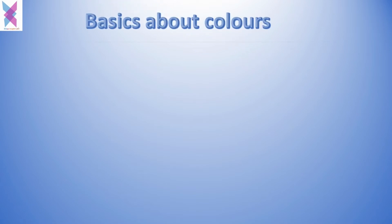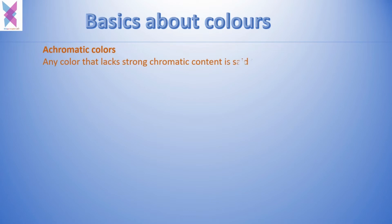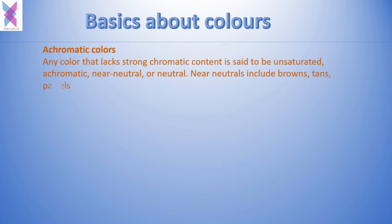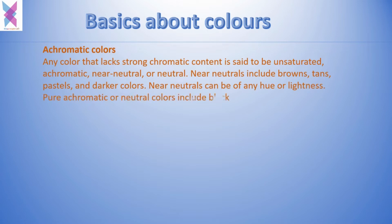What is achromatic color? Any color that lacks chromatic content is said to be unsaturated, achromatic, near-neutral, or neutral. Near-neutrals include browns, tans, pastels, and other darker colors. Near-neutrals can be of any hue or lightness. Pure achromatic or neutral colors include black, white, and all grays.